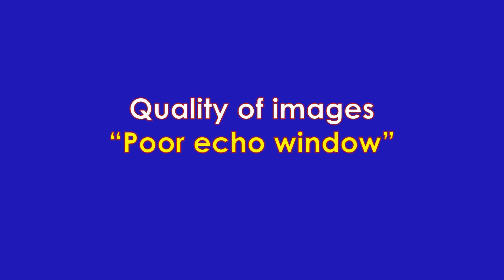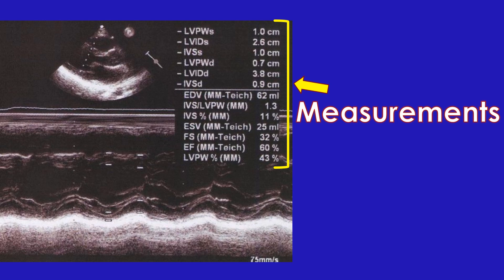Chamber sizes and measurements of thickness of chamber walls are either given as tables or the relevant picture showing the measurements is printed on the report. In some reports, reference normal values are also provided. While looking at reports of children, measurements should be interpreted considering the physical size of the child, as heart chambers grow in size when the child grows. You will need nomograms for comparison.